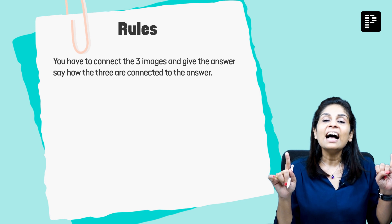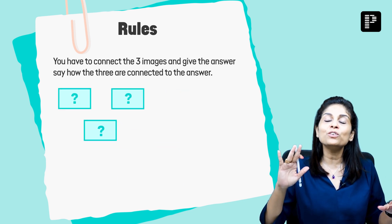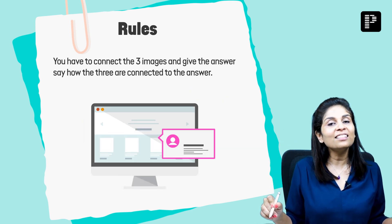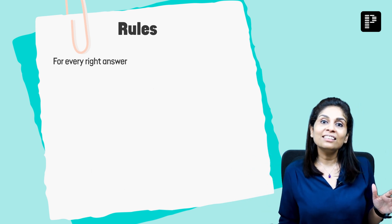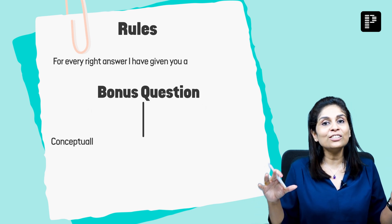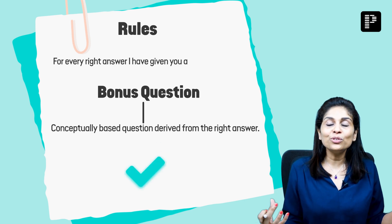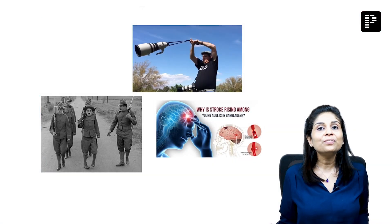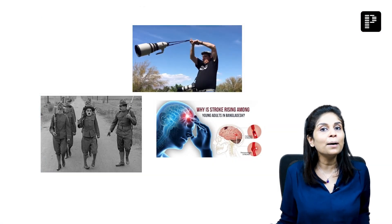As soon as I show you those three images, pause the video, give yourself 45 seconds, find out the right answer, type it in the comment section, and come back to check the right answer. For every right answer, I've also given you a bonus question — a conceptual question based on the right answer. If you get the bonus question right, you get an additional 20 points. I'm very curious to know how much you all score.